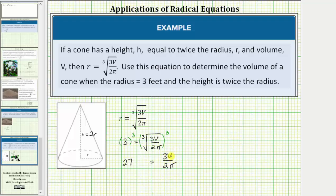For the next step, let's clear the fraction from the equation by multiplying both sides of the equation by two pi. So we multiply the right side by two pi and multiply the left side by two pi. On the left, 27 times two pi equals 54 pi.